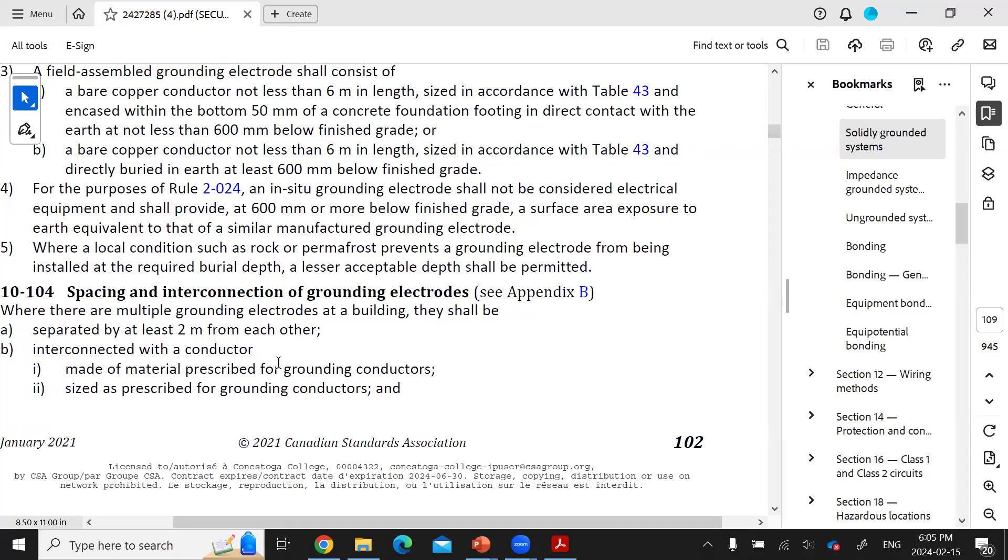Let's talk about Section 10, Grounding and Bonding of the Canadian Electrical Code Rule 104 called Spacing and Interconnection of Grounding Electrodes.